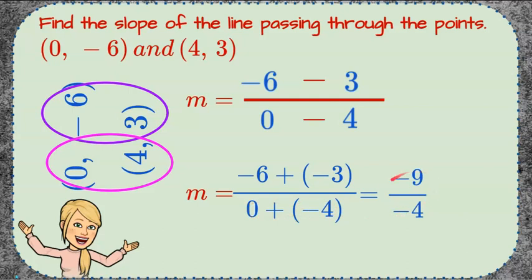Now we have negative 9 over negative 4, or think of that fraction bar as your division. Negative 9 divided by negative 4, so a negative divided by a negative is going to be a positive, and 9 fourths is our slope because that is in simplest form.